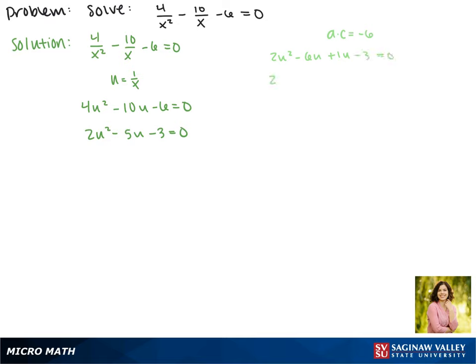Grouping together the first two, we can factor out a 2u, and in the second two, we can only factor out a 1. Now we can pull out that u minus 3 and make this 2u plus 1 times u minus 3, and this is how our equation factors.